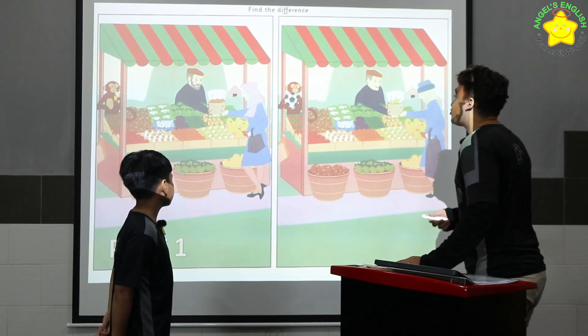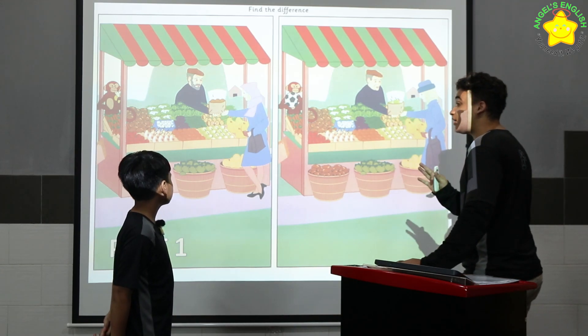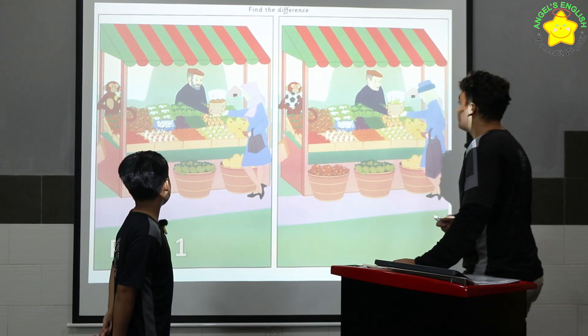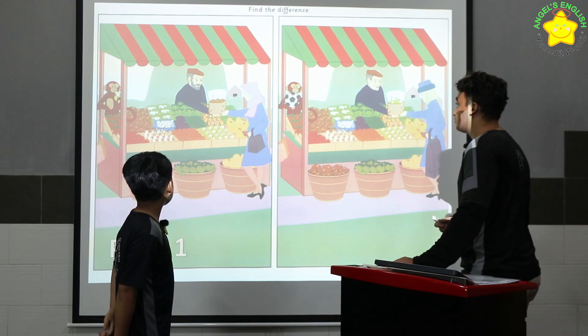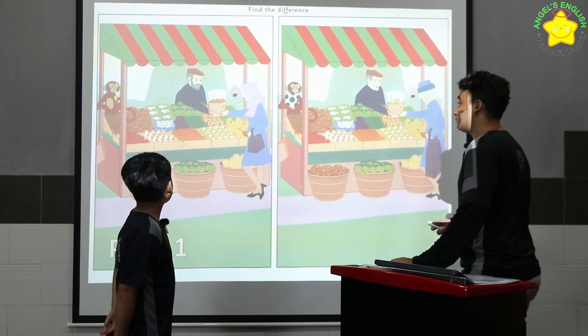Look at the two pictures, there are many differences. Can you tell me three differences? In the first picture, the monkey has got a banana, but in the second picture, the monkey has got a ball.